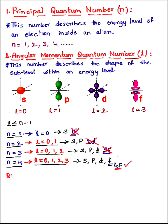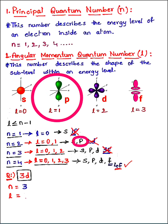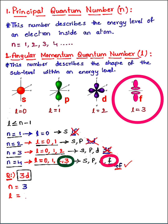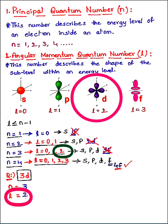Here's a question: for an electron in the 3d sub-level, what are the n and l values? The number in front gives n, so n=3. For the d sub-level, l is always 2. So for the 3d sub-level, n=3 and l=2.